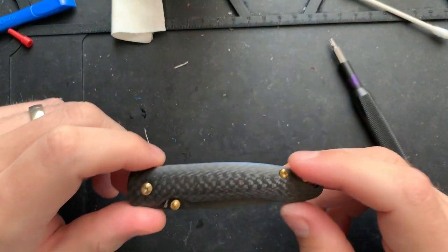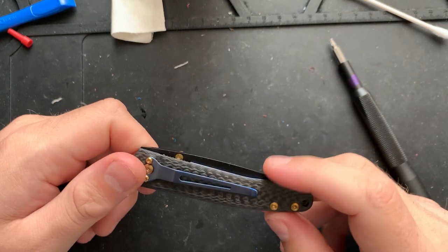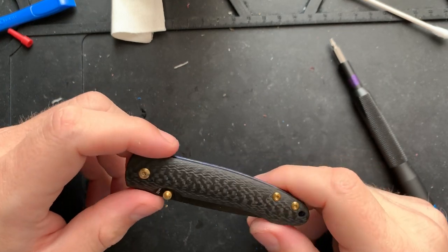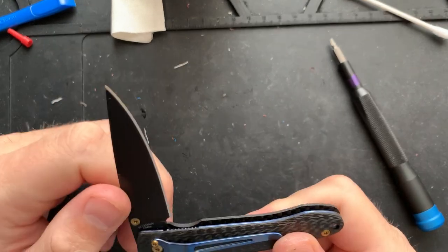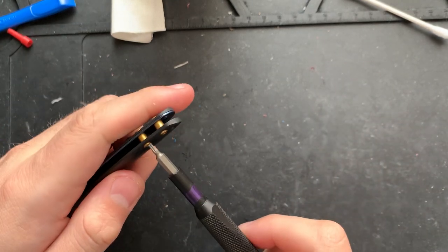Hey everybody, Nick here, and today I've got a little disassembly and maintenance video for you on this little guy right here. This is the A.G. Russell Lightning Bug, or lightning bug that is. They don't say little, but it's a lightning bug, which is implied to be little.